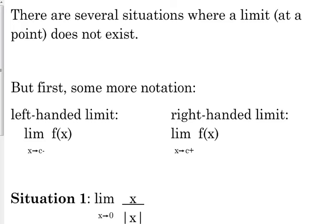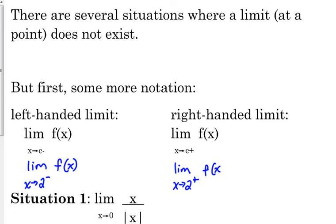We use negative to denote approaching from the left, and the right-handed limit has a plus after the number — that means you're looking at a right-handed limit. When I write it, it's more of a superscript on the number. So if I was trying to denote the limit as we approach two from the left of f(x), I try to make the negative at the top of my number so I don't think it's a negative number, but I recognize it as a left-handed limit. Same thing for right-handed — X approaches two with the plus at the top of the two.